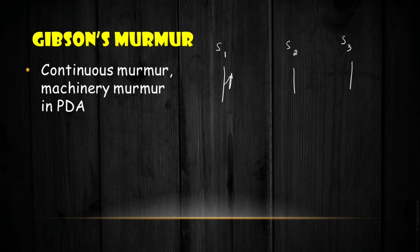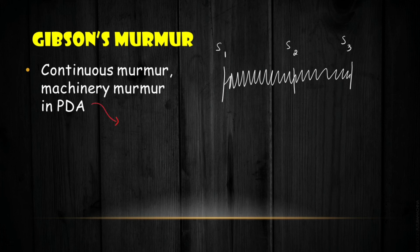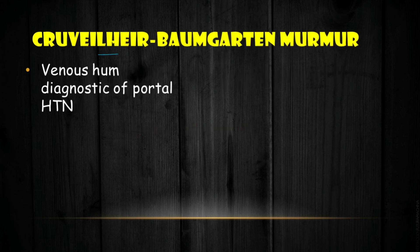Gibson murmur, also called continuous murmur or machinery murmur, is heard throughout both the systolic and diastolic phases due to patent ductus arteriosus (PDA) — the persistence of the ductus arteriosus between the aorta and pulmonary artery. Cruveilhier-Baumgarten murmur is a venous hum diagnostic of portal hypertension in the abdomen.